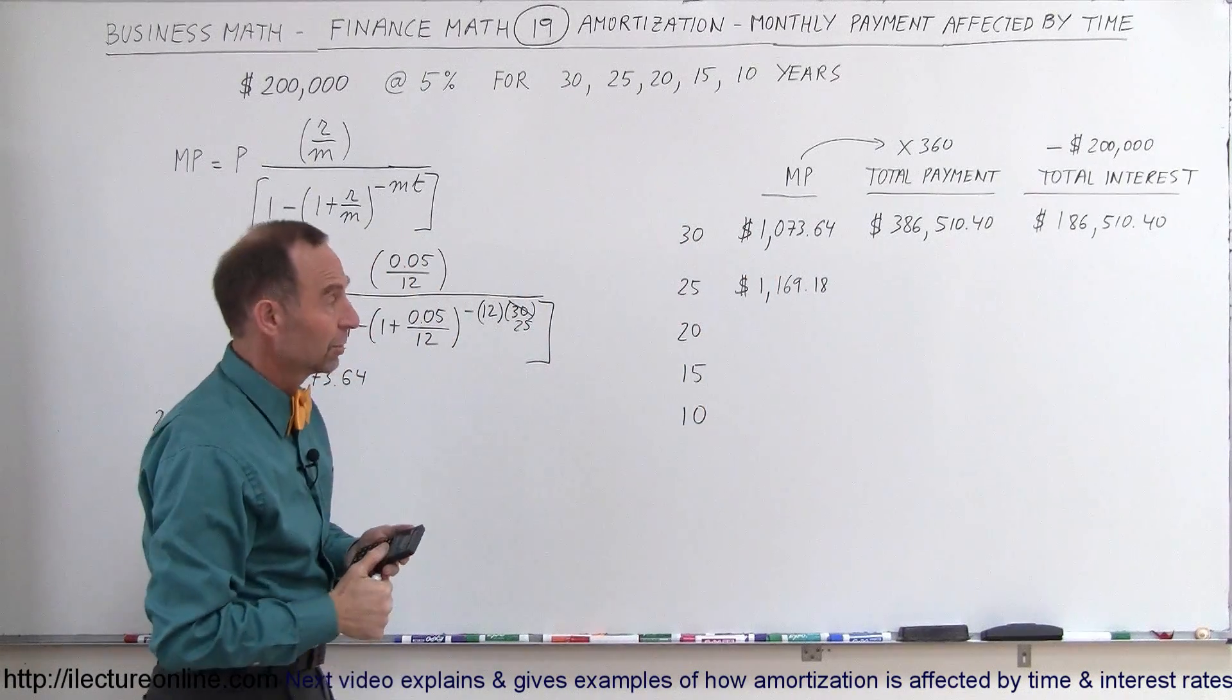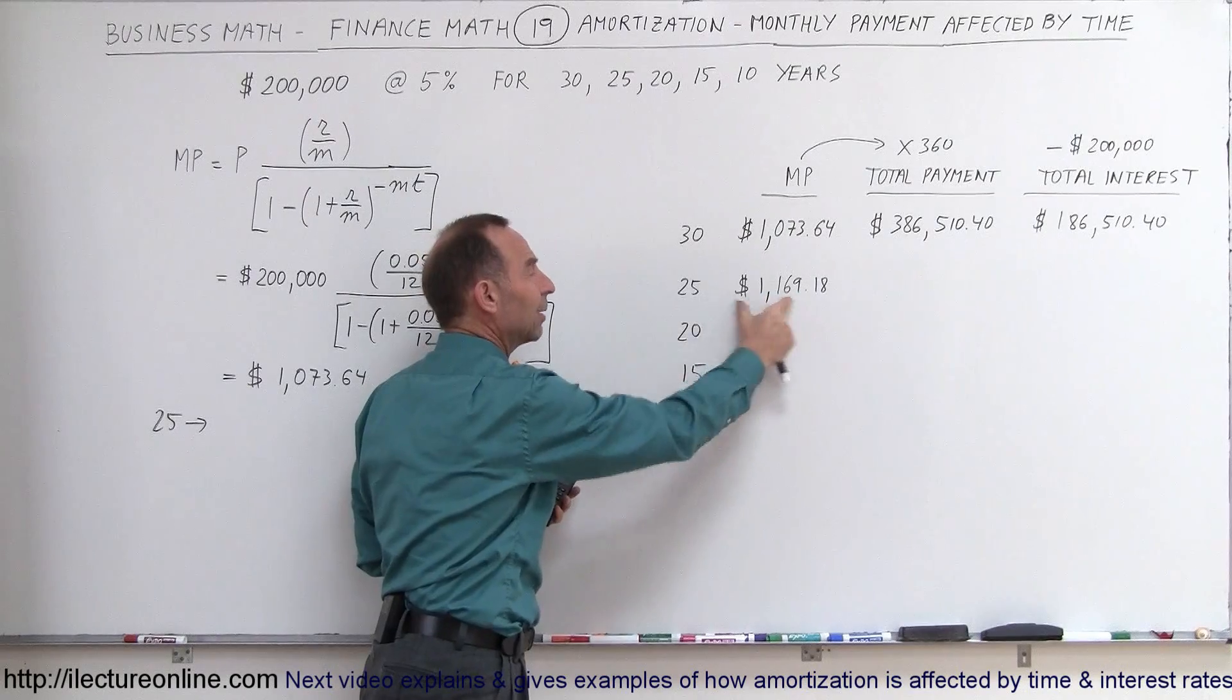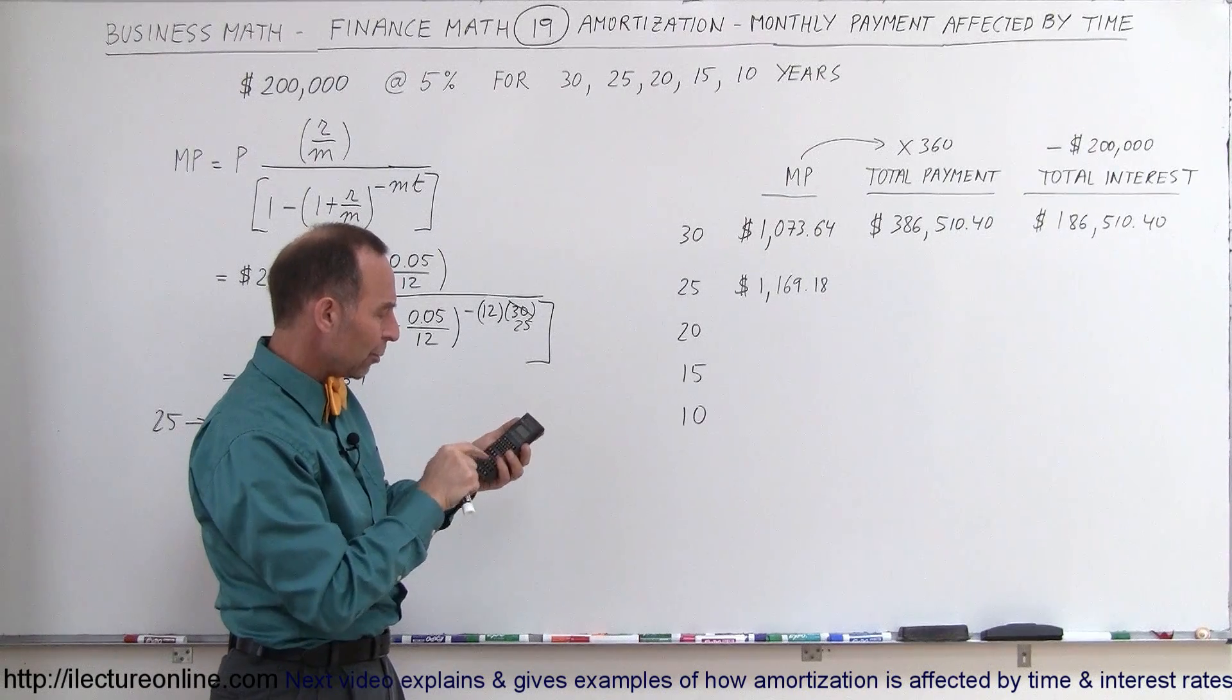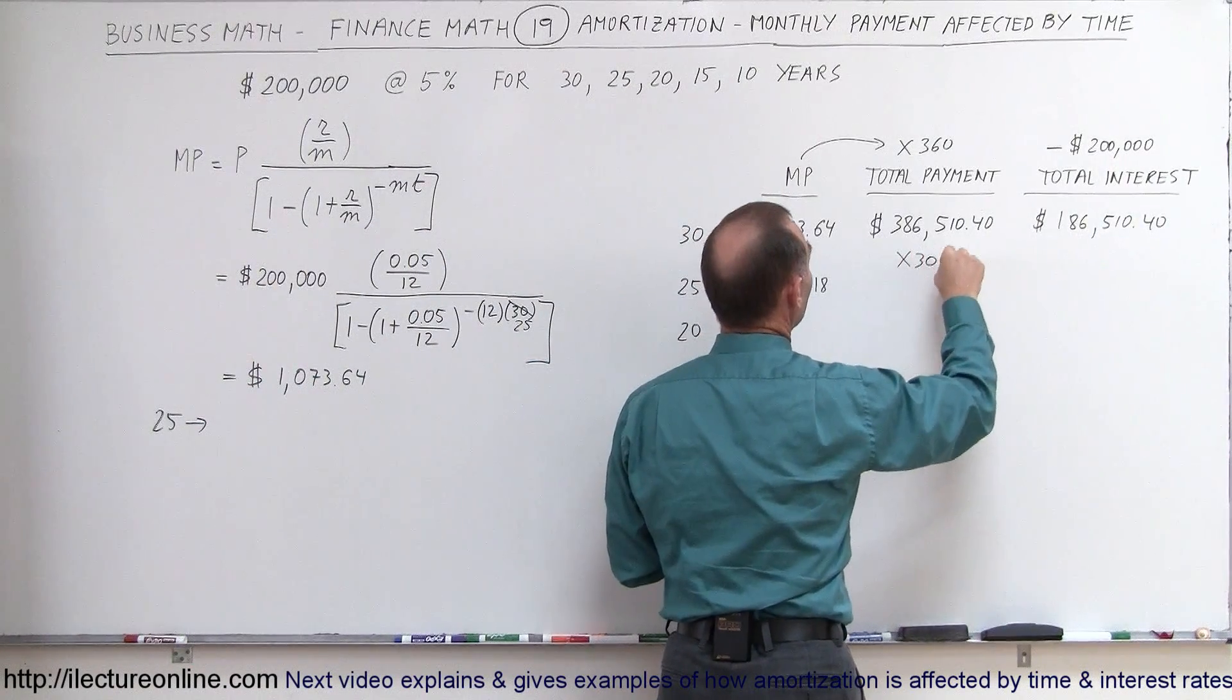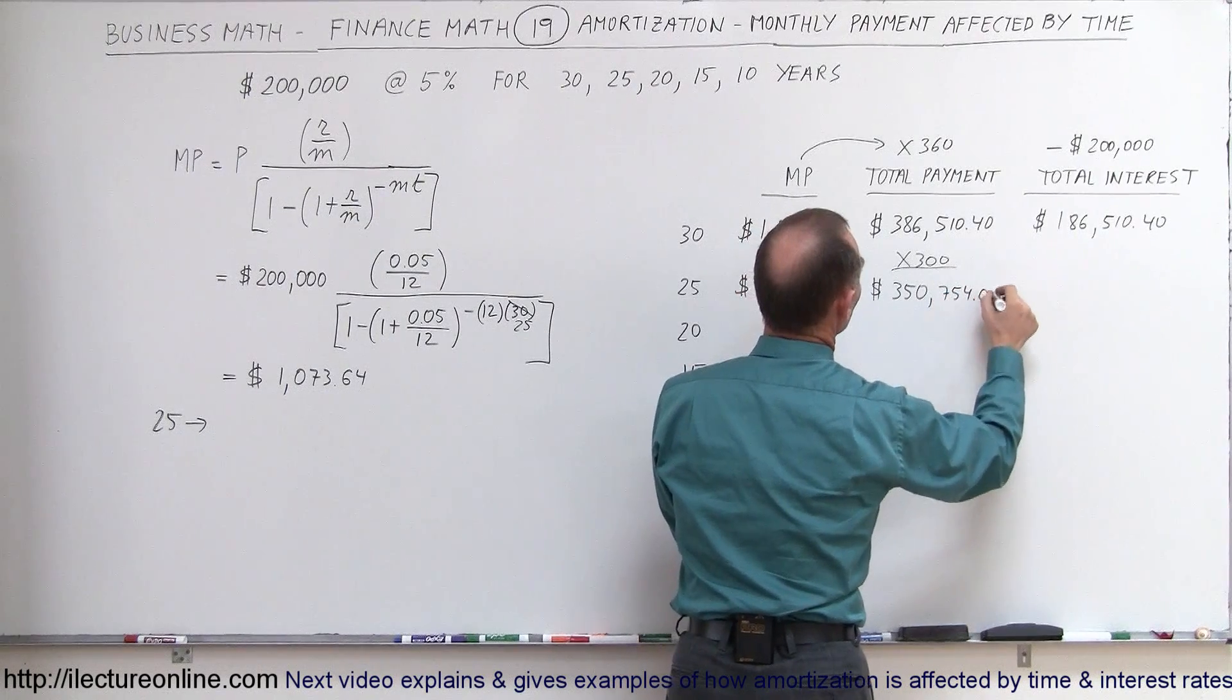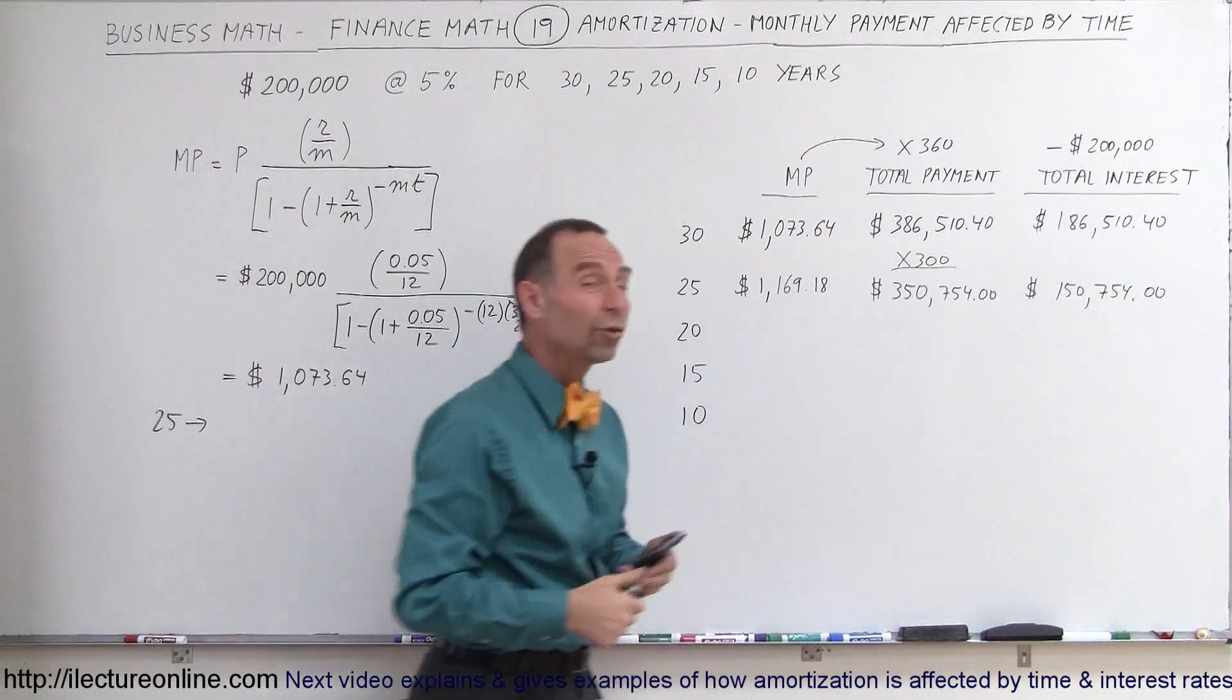So your monthly payments are higher. You may not be able to afford the monthly payments of $1,169, and therefore you may want to go for a 30-year loan. But if you could fit it into your budget, you can then pay slightly higher payments for only 25 years. Let's see what the difference is. $1,169.18, and now we're going to multiply this times 300, not 360. The total amount of payments you paid to the bank will now be $350,754.00.